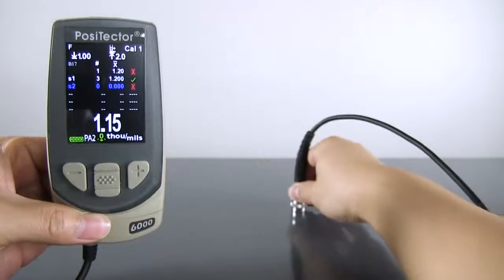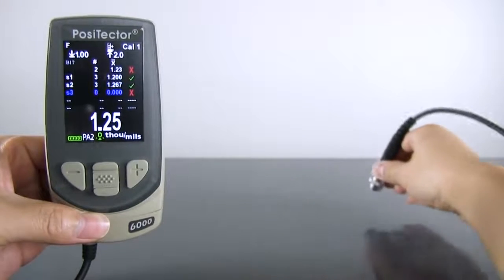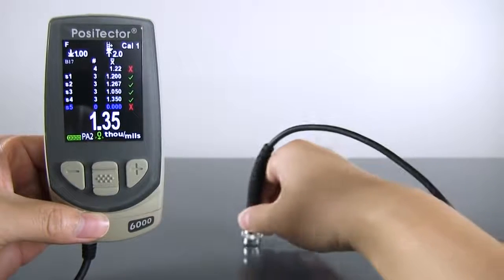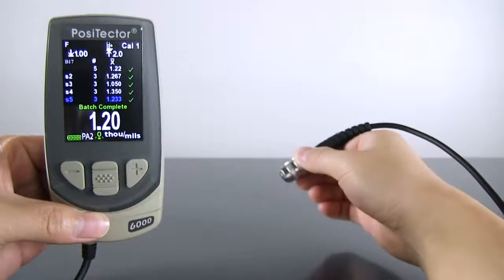For example, when PA2 mode and scan mode are enabled at the same time, the gauge automatically scans a set number of readings for each spot, proceeding to the next spot when the probe is lifted.